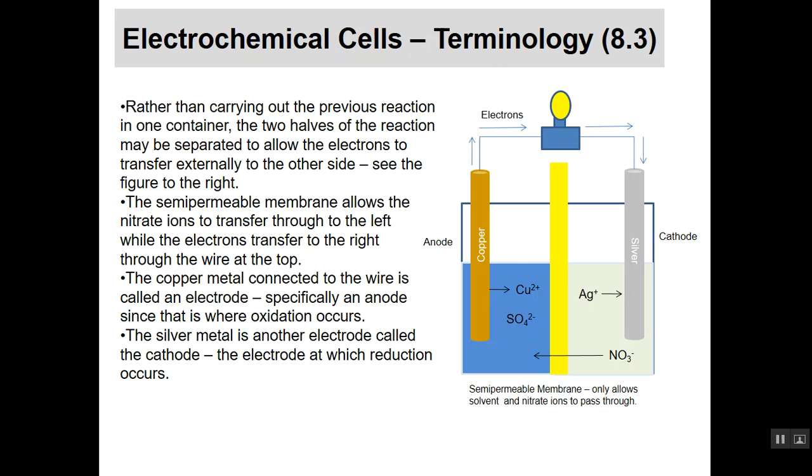Now let's look at electrochemical cells. The reaction we just saw all went out in one flask. If we could figure out a way of separating those two components from each other, we could actually get those electrons to maybe go through a wire and do something useful for us. We can do that by setting up a beaker that looks like this. That yellow thing in the middle is what we call semipermeable membrane. It only lets some things go through. This one lets the solvent go through and also lets the nitrate ions pass through, those negatively charged nitrate ions. Notice they didn't take place anywhere in the reaction.